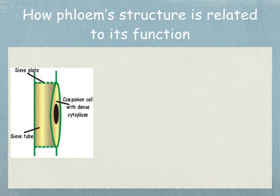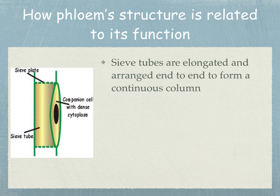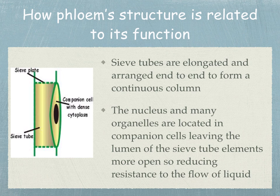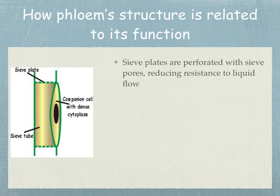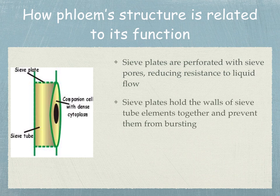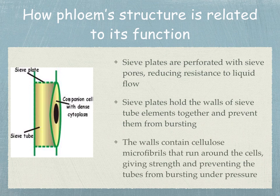Let's have a look at how phloem's structure is related to its function. Its function is to transport organic materials in solution. The sieve tubes are elongated and arranged end-to-end to form a continuous column. The nucleus and many organelles are located in the companion cells so that the lumen of the sieve tube elements is more open and reduces resistance to the flow of liquid. Sieve plates are perforated with sieve pores, which reduces resistance to liquid flow. The sieve plates hold the walls of the sieve tube elements together and prevent them from bursting. The walls contain cellulose microfibrils that run around the cells, giving strength and preventing the tubes from bursting under pressure.